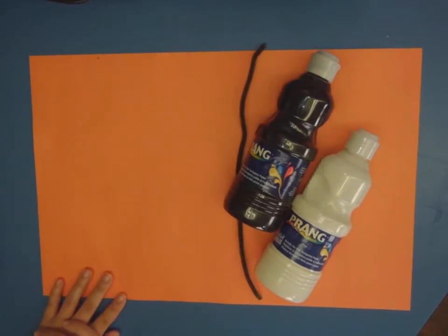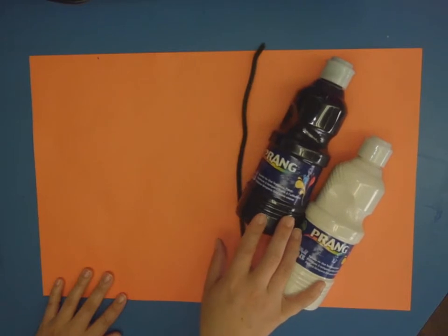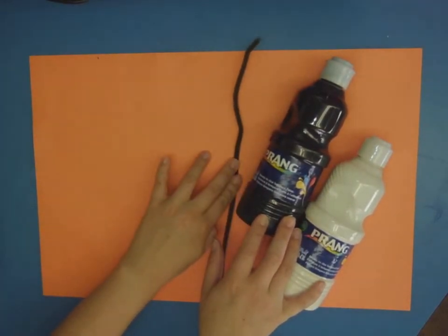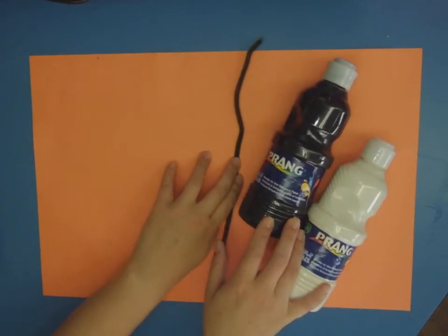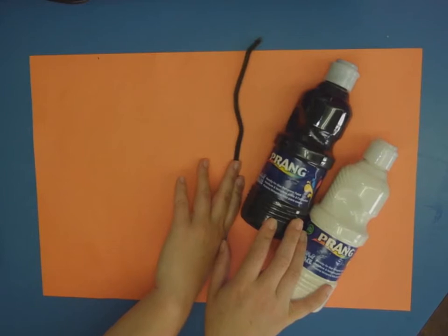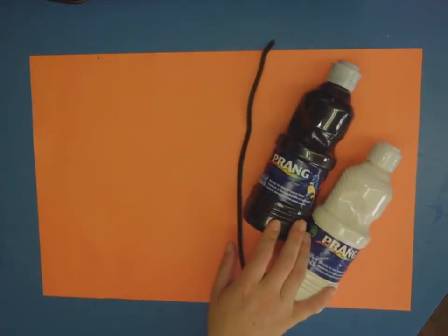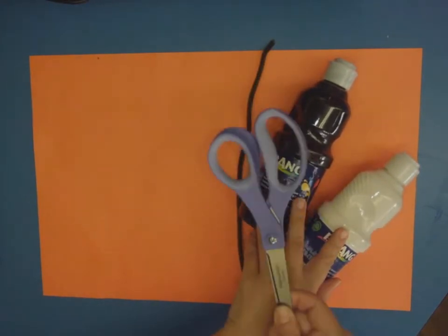So this is a really quick and easy project that you can do at home. I have supplies that you can get from the dollar store - liquid paint, colored paper, and a pipe cleaner. I also need to use a hot glue gun but you need to make sure that you're doing that with an adult because I've already burned myself and I'm an adult. If you don't have a hot glue gun you can always use regular glue, it will just take a little bit longer. You also are going to need a pair of scissors for the second part.